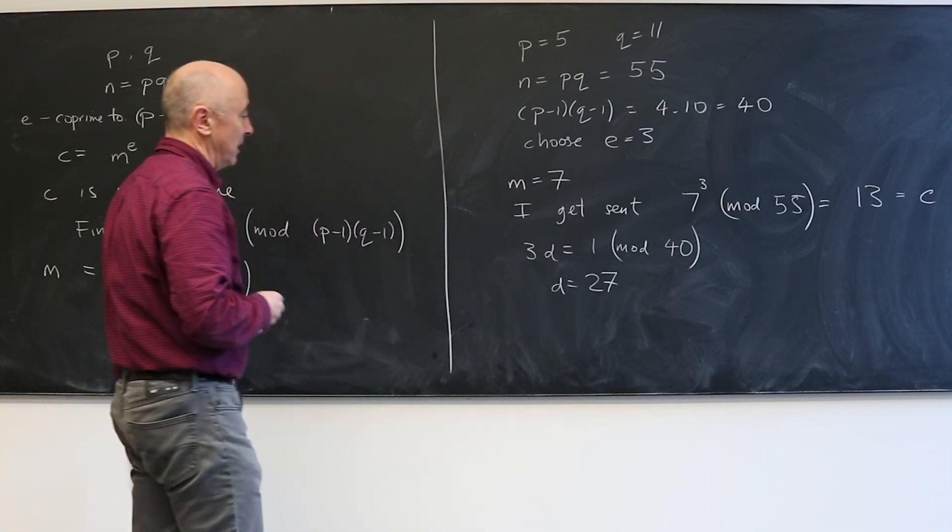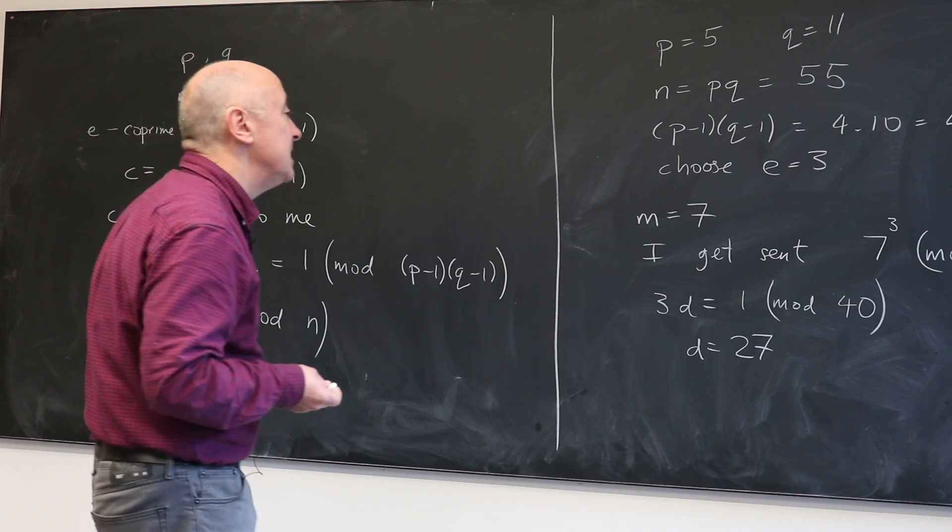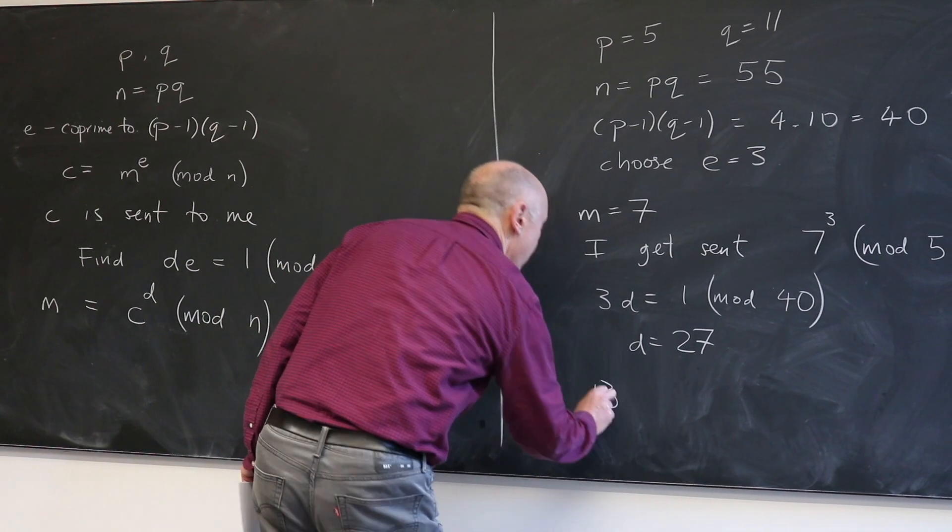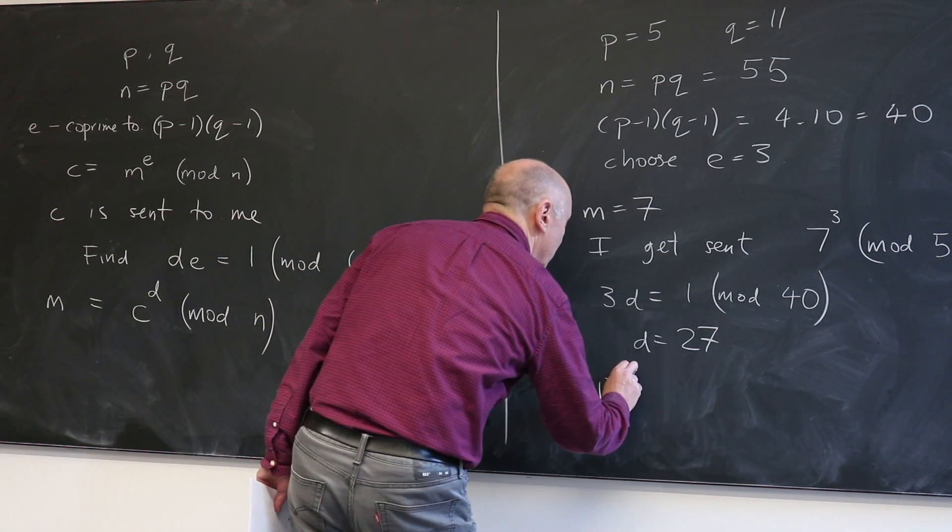So D is 27 is a number that I can use. And then to decode, I'm sent C which is 13.